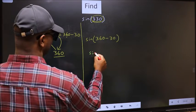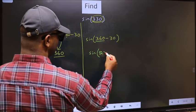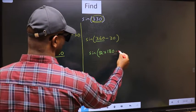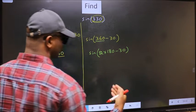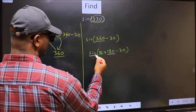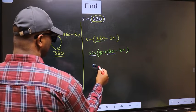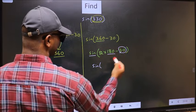Sin. Now in place of 360, you should write 2 into 180 minus 30. Here we have 180. So sin is not going to change. It will remain sin. And inside, we get this angle 30.